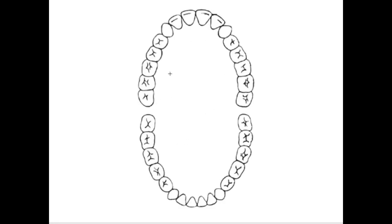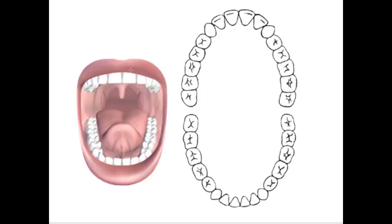First I want to introduce this diagram — it's incredibly important and you'll probably see something like it hanging up in a dental office. This picture from 3D Science helps us get oriented. We're basically looking at our patient in the dental chair with their mouth wide open, and their right side is on the left side of this image and their left side is on the right side of this image, which does make things very confusing at first.